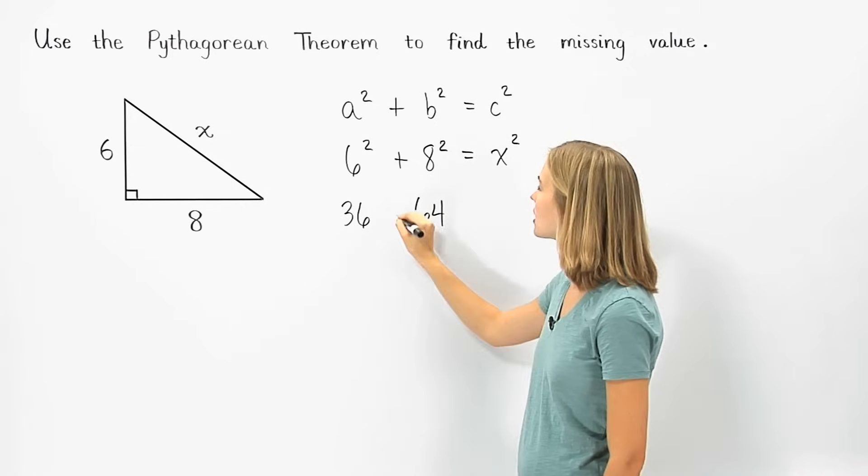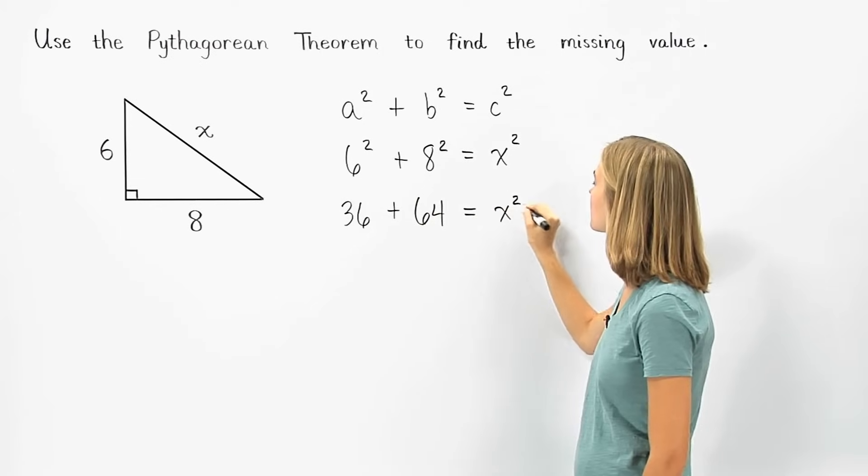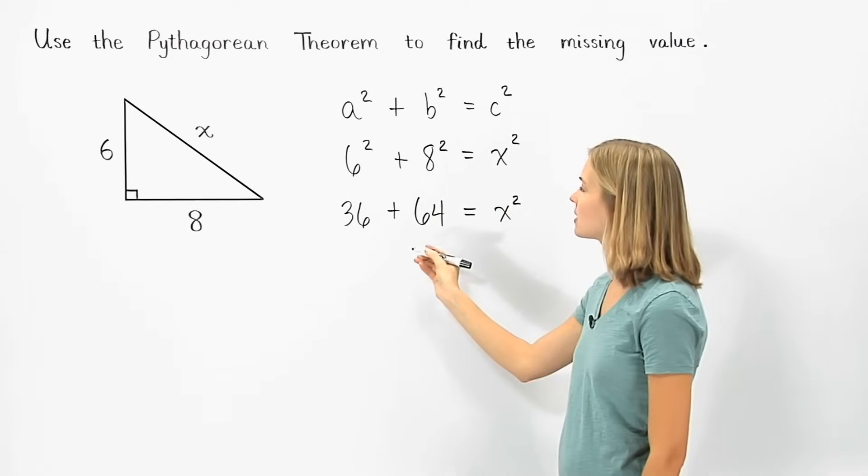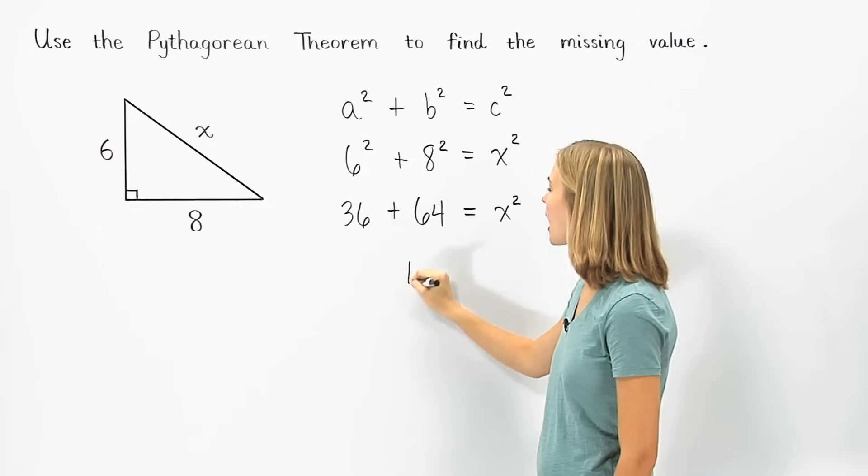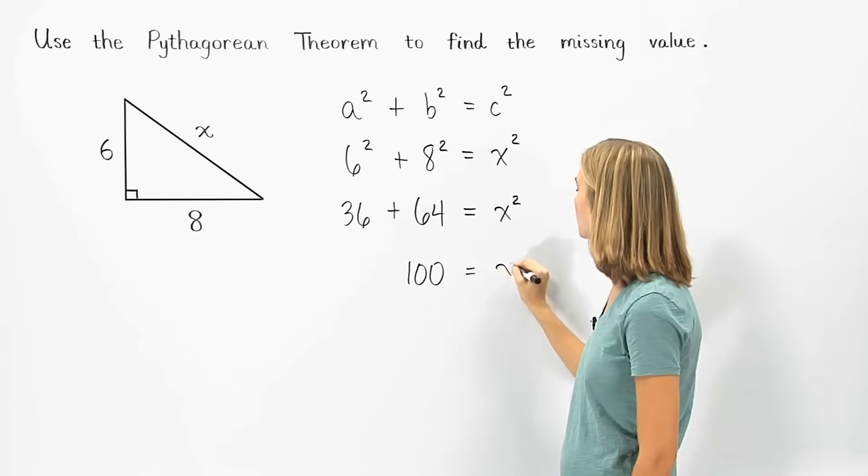So we have 36 plus 64 equals x squared. Next, 36 plus 64 is 100, and we have 100 equals x squared.